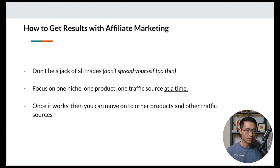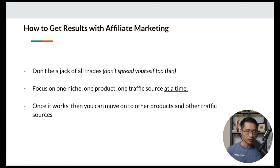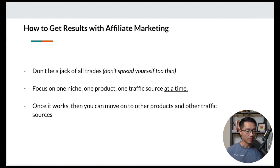Next, how to get results with affiliate marketing. The number one key is don't be a jack of all trades — if you focus on too many offers and products at once, you won't get results. When you're first starting, focus on one niche, one product, and one traffic source at a time. Once you make it work, you can move on to other products and traffic sources.